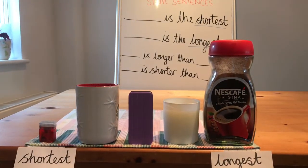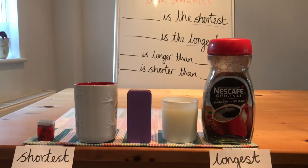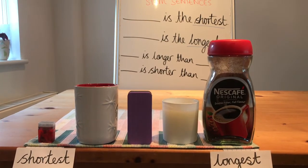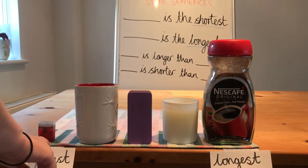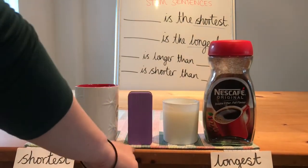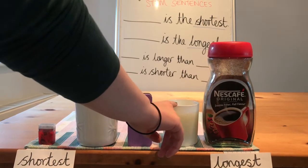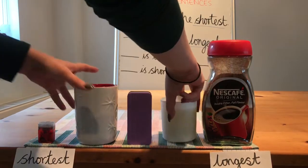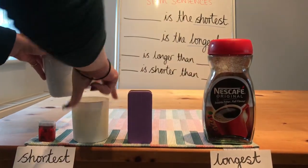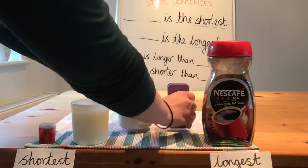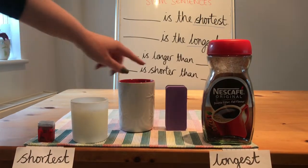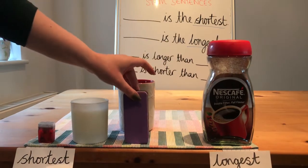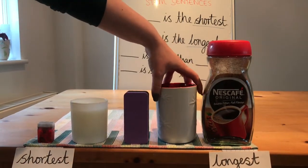Now we need to order the three items in the middle to make sure that they are in their correct places. I'm going to try and find the one that's the next size up from the sharpener. If we have a look we can see that this is the candle because it is shorter than the rubber and shorter than the mug. Next we need to compare the rubber and the mug. We can see here that the mug is just bigger than the rubber, so the rubber needs to go in the middle and the mug needs to go next to the coffee cup.